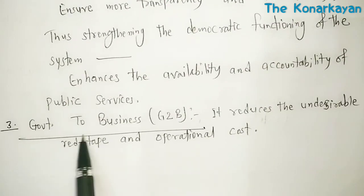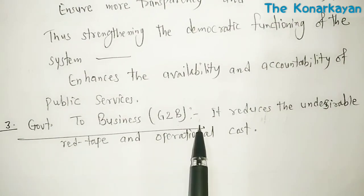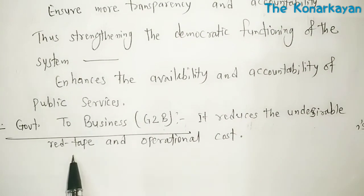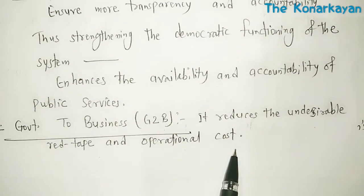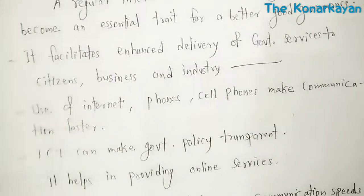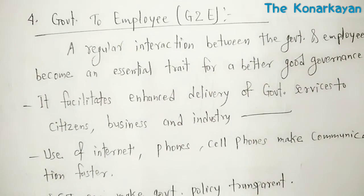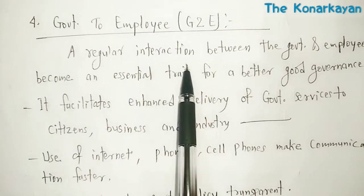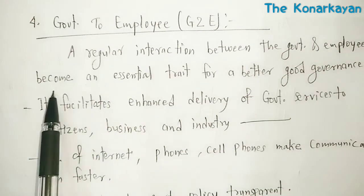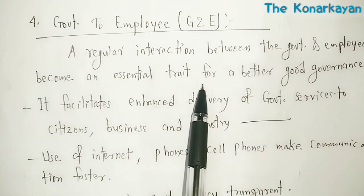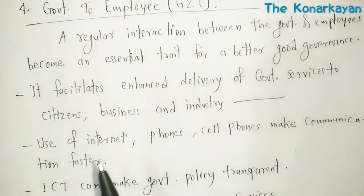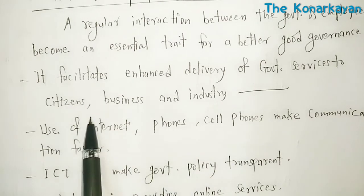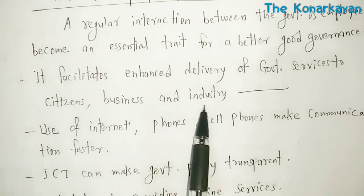Third is Government to Business, G2B. It reduces undesirable red tape and operational costs. Fourth is Government to Employees, G2E. Regular interactions between the government and employees become an essential trait for better governance. It facilitates enhanced delivery of government services to citizens, businesses, and industries.